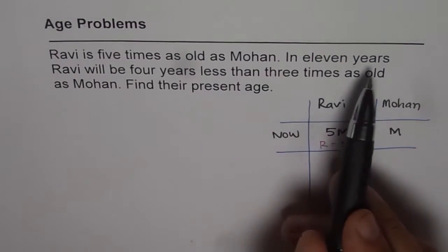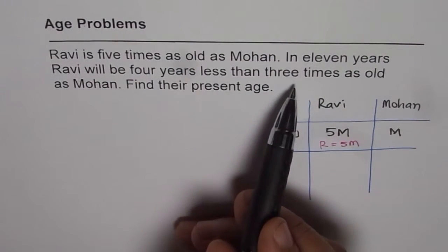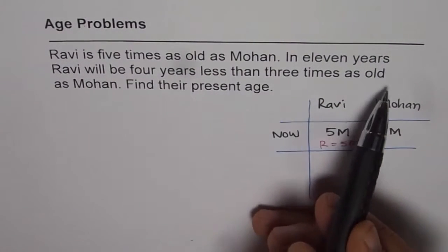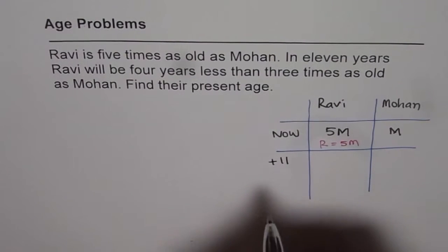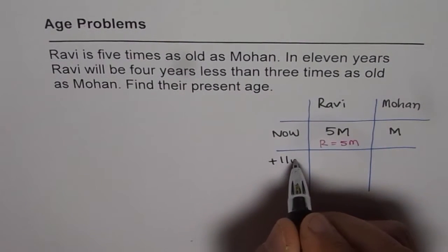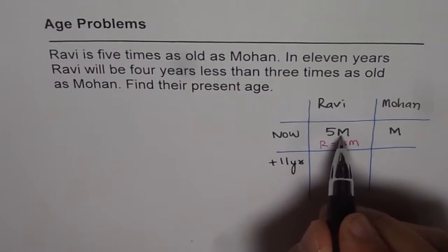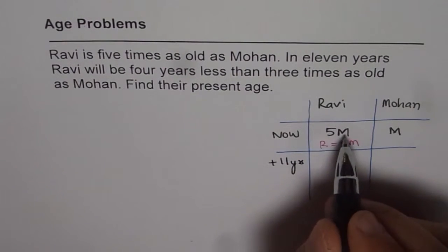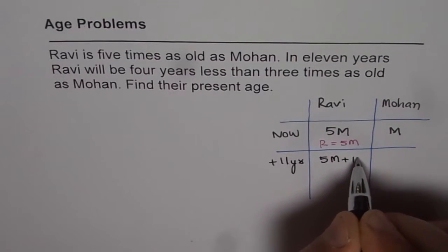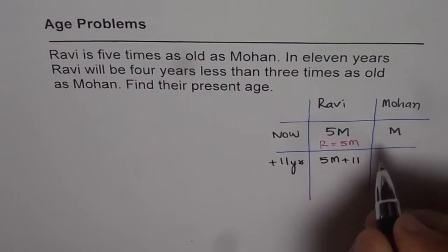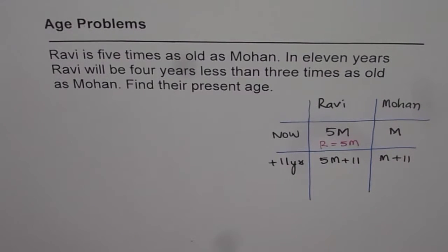In 11 years, Ravi will be 4 years less than 3 times as old as Mohan. So in 11 years, that means plus 11 years. The age of Ravi will be 5M plus 11, and for Mohan it will be M plus 11. Both are going to age.